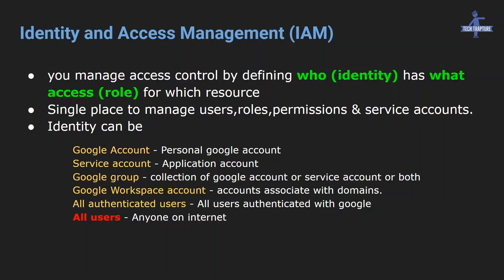So what is IAM? The definition is: you can manage access control by defining who — meaning identity — and what access — meaning role — for which resources. This is a single place to manage users, roles, permissions, and service accounts. Identity can be a person's Gmail account or anything.